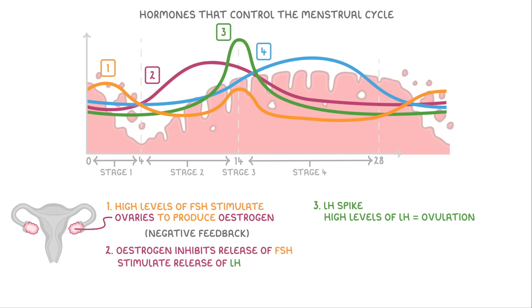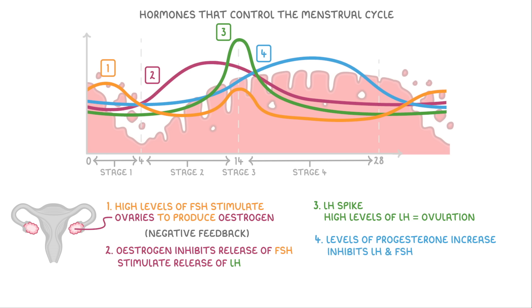Finally, towards the end of the cycle, the levels of progesterone increase, which inhibits the release of both LH and FSH. So the levels of both of these hormones drop until the cycle starts again.